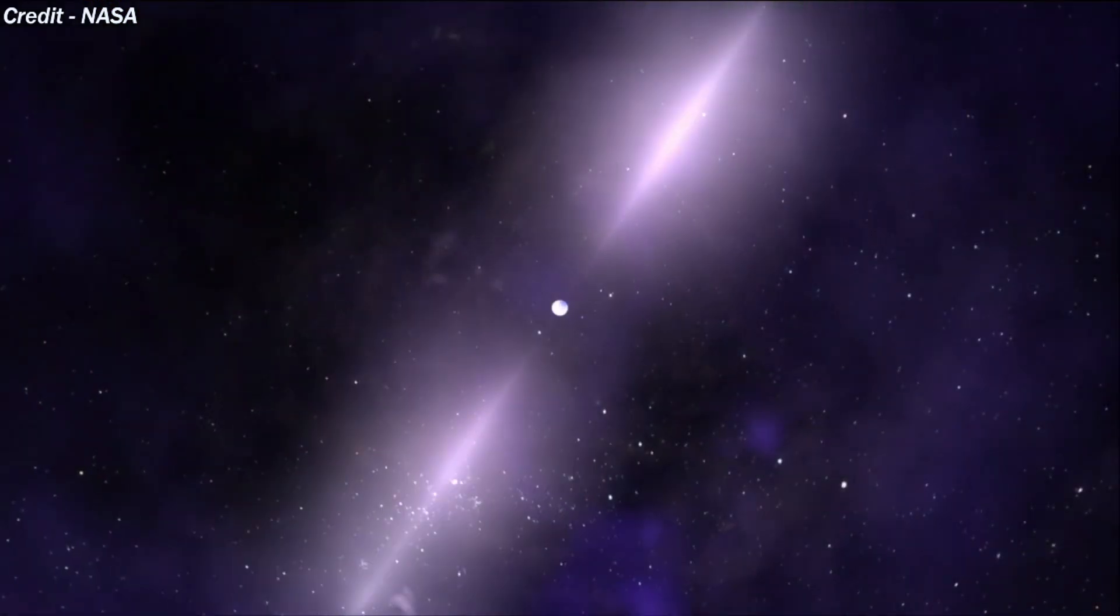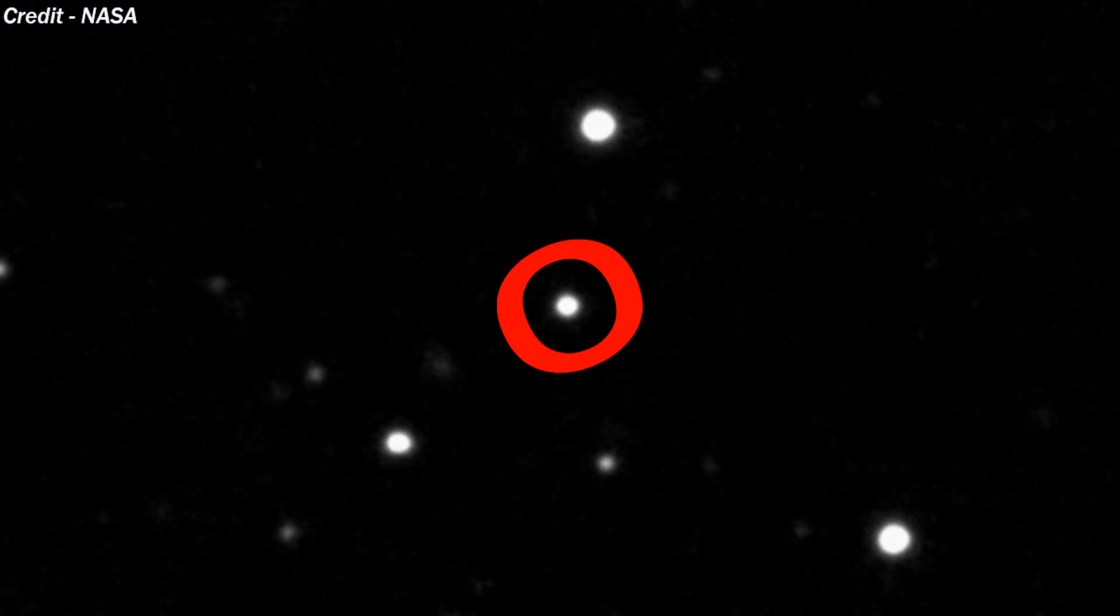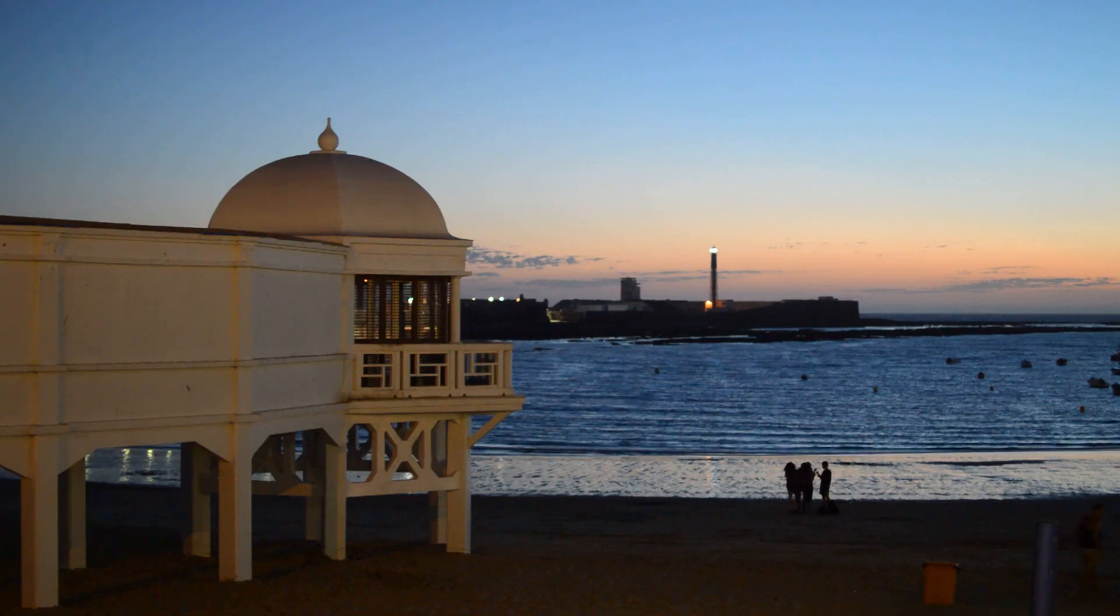Now when you, on Earth, can see the pulsar and its beam, it would appear to you as if it is twinkling or turning on and off like a light bulb. This is because you would only see the beam when it is pointing towards your direction.